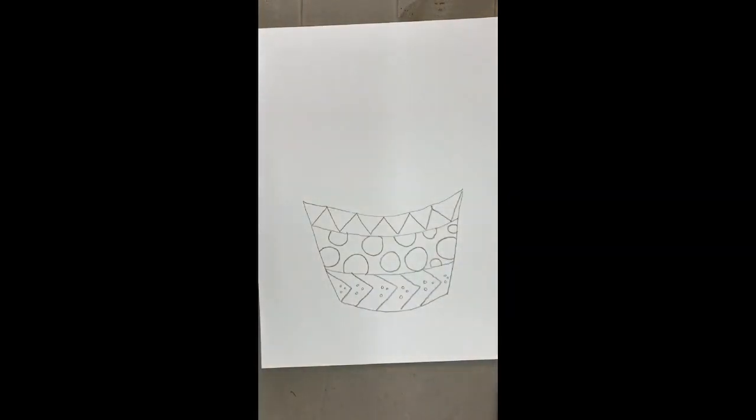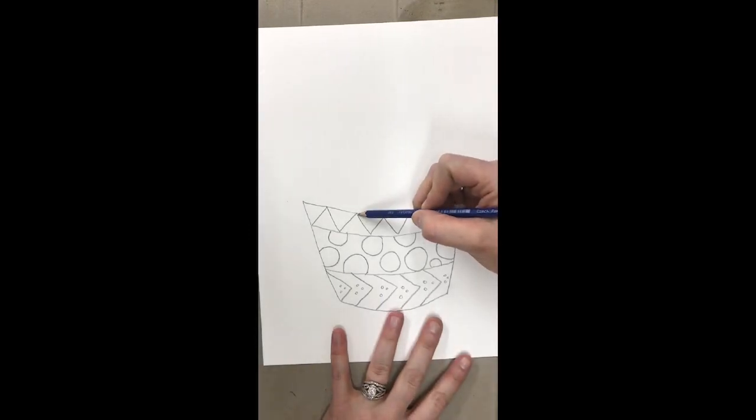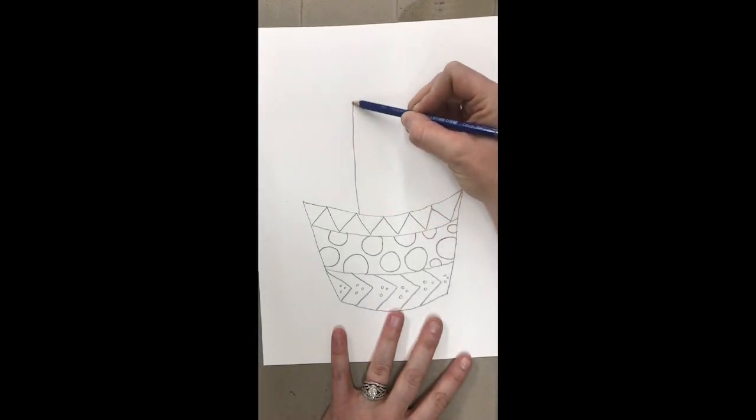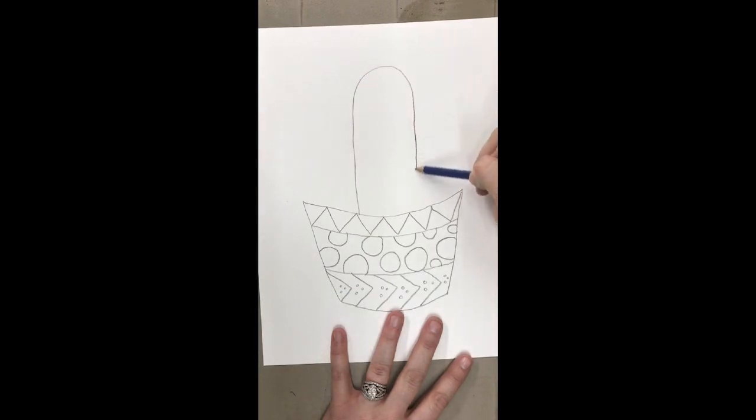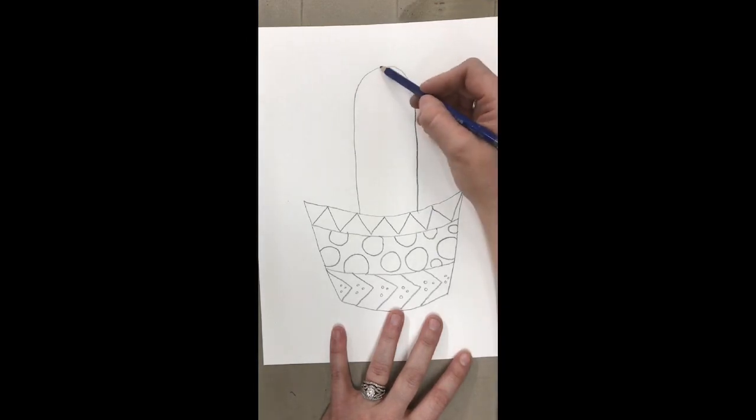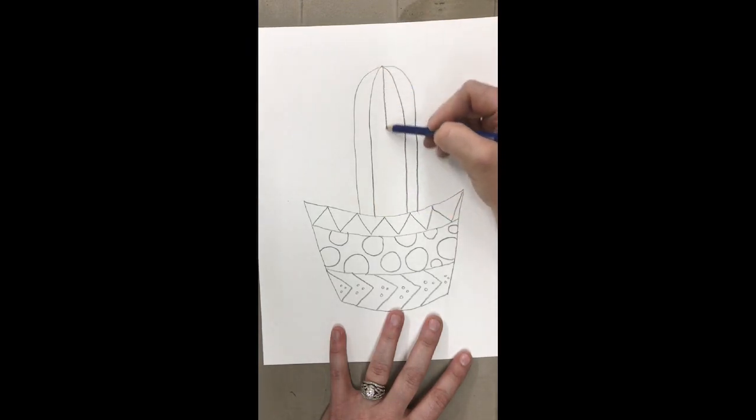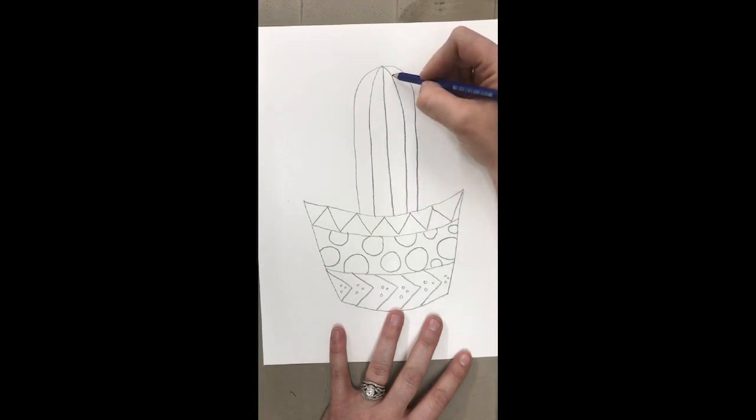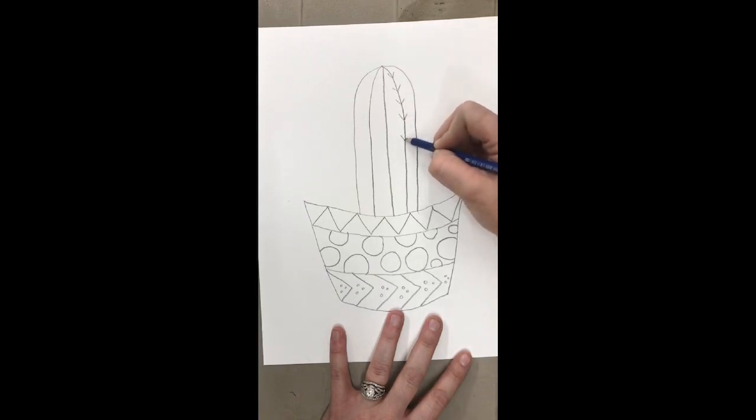Okay, so let's get started. I'm going to start with my center cactus first and you don't have to draw the same one as me, that's fine. And this is what we call contour lines. We're just drawing the outline of our cactus. It's kind of like, I tell my students, it's like a coloring book, just the outline, that way we can color it in later.